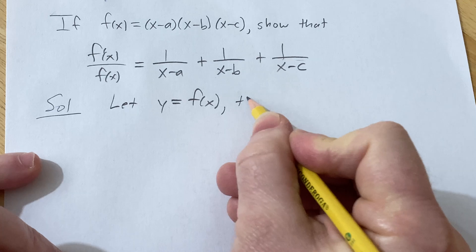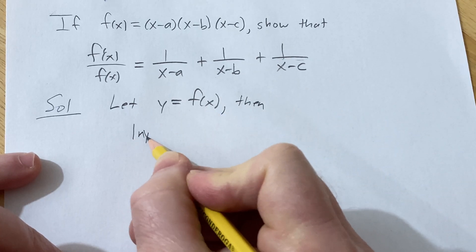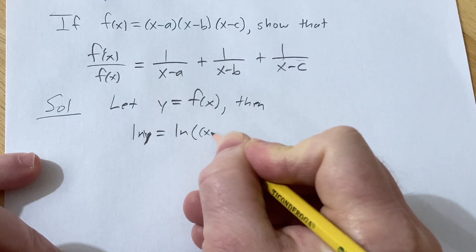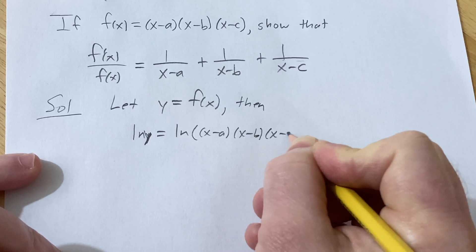So if you call it y, then the natural log of y is basically the natural log of all of this stuff. So (x-a)(x-b)(x-c).